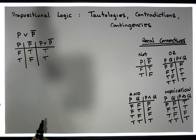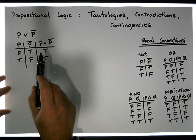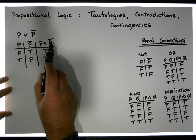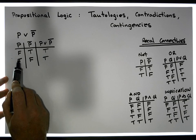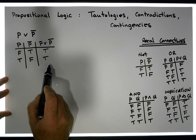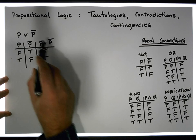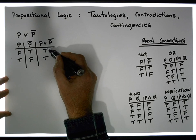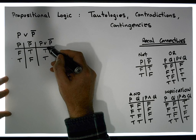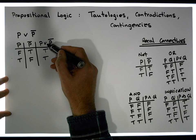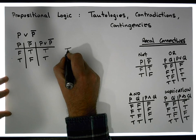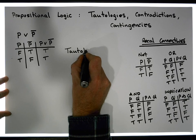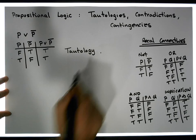The important thing here is that the output of this particular expression under all possible inputs — irrespective of what the input is — the output is always true. We call a propositional statement whose output evaluates to true under all possible conditions a tautology.